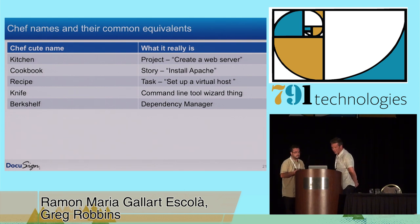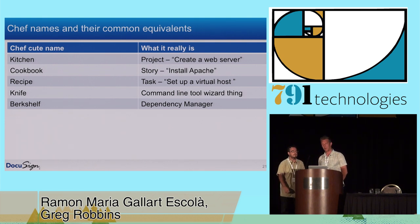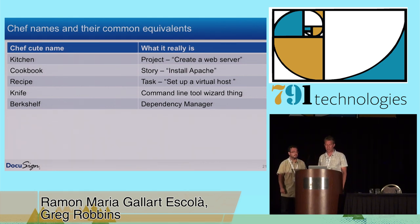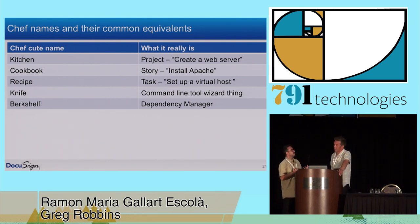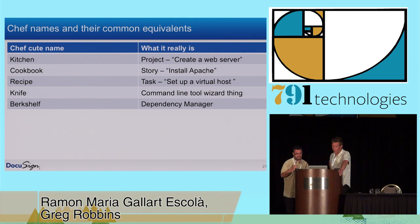I created a summary that lines up the cute Chef names with what they really are. Kitchens are projects. Cookbooks are a group of related tasks. A recipe is a specific task. Knife is the command line tool. Berkshelf is dependency management. Because when you're new to the Chef world, the terminology can be quite confusing. We suffered a little bit with that — it's pretty clever the way they thought of the naming conventions, but it's a lot to digest at first.